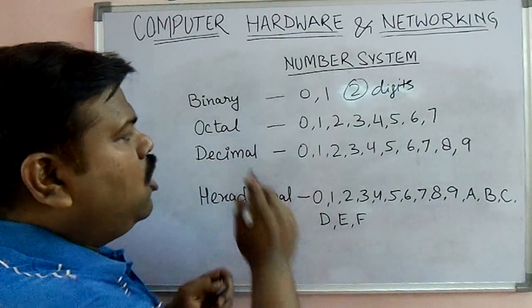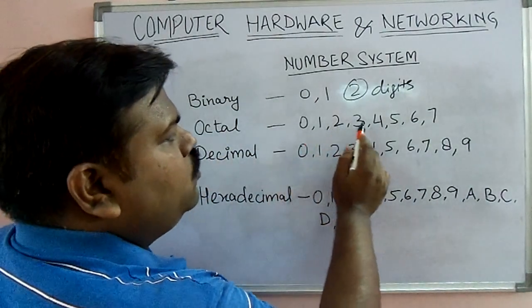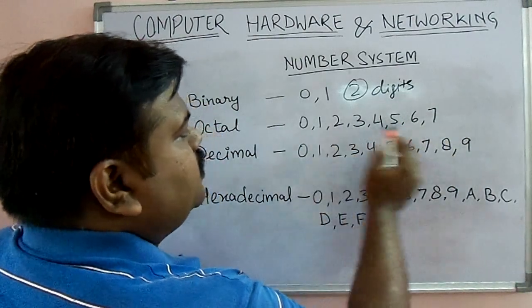Likewise, in octal there are eight numbers: zero, one, two, three, four, five, six, seven. This is eight digits.